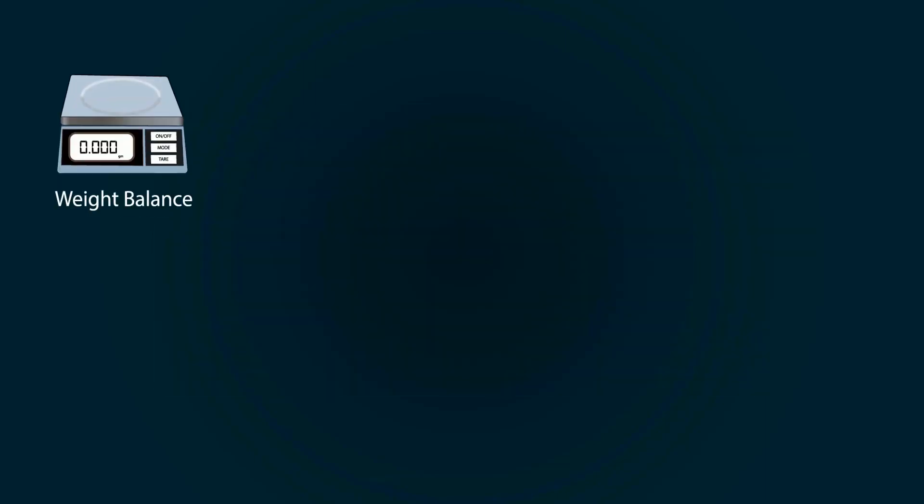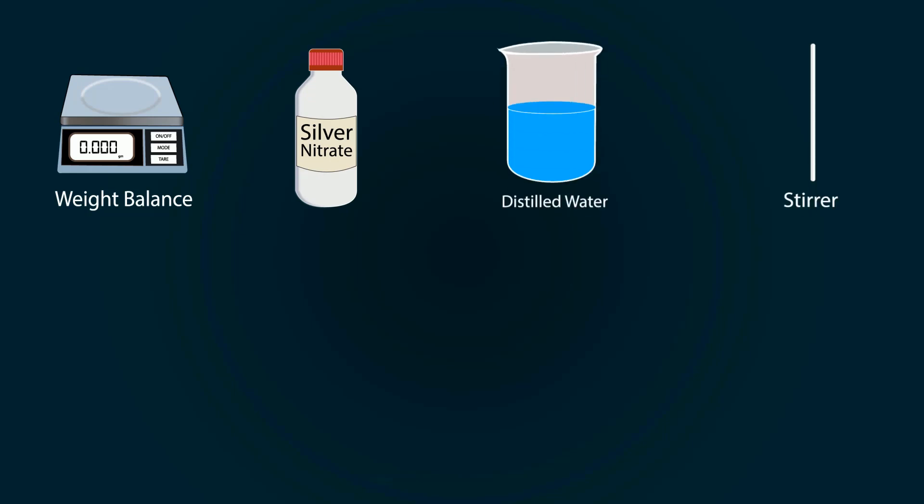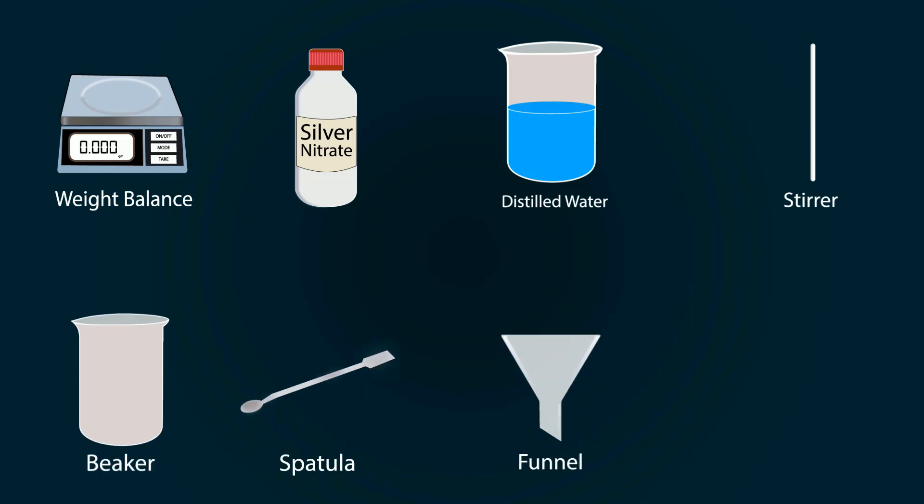Required apparatus and chemicals include a weight balance, silver nitrate, distilled water in a beaker, a stirrer, an empty beaker, a spatula, and a funnel.